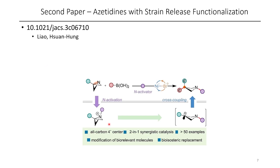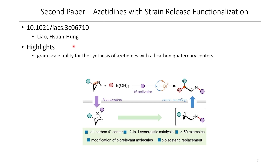The second paper involves the synthesis of azetidines using a strain-release approach. Some highlights include the gram-scale synthesis of azetidines with an all-carbon quaternary center. The authors were able to use nickel-1 bromide as well as an activator, which was an N-Boc group, to ring-open this three-membered ring, and were subsequently afforded with their desired product after a couple of steps.